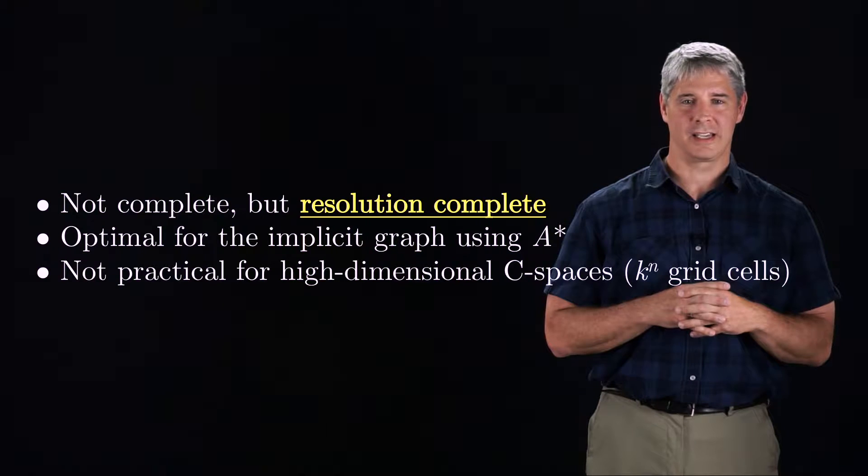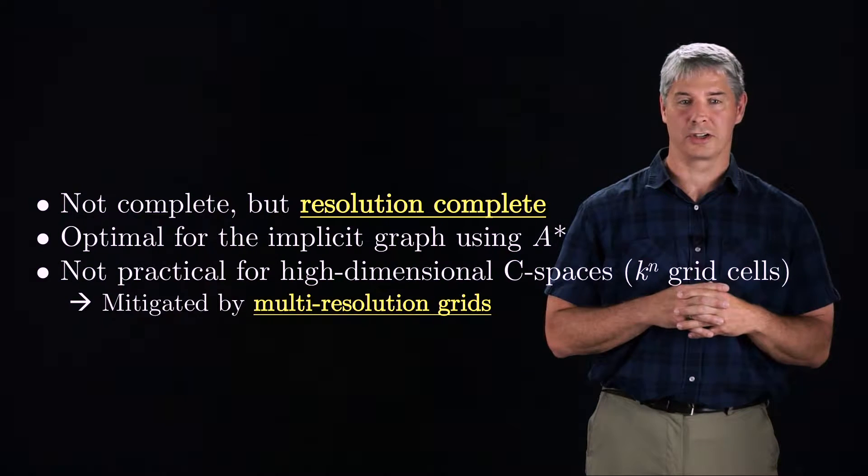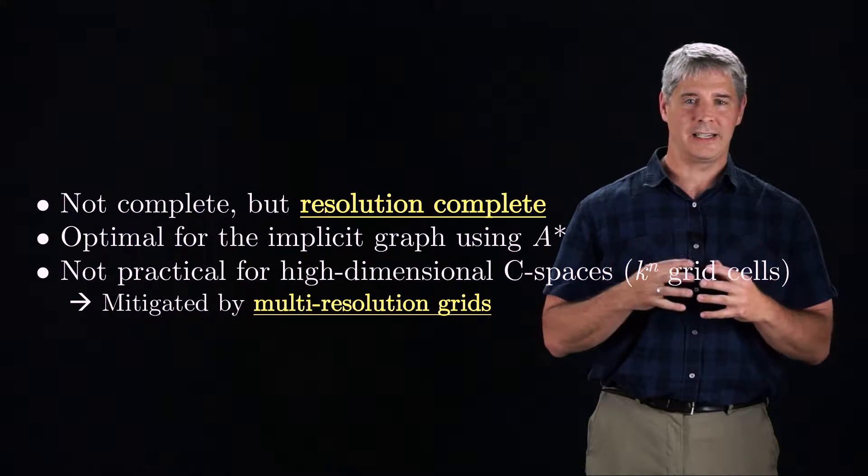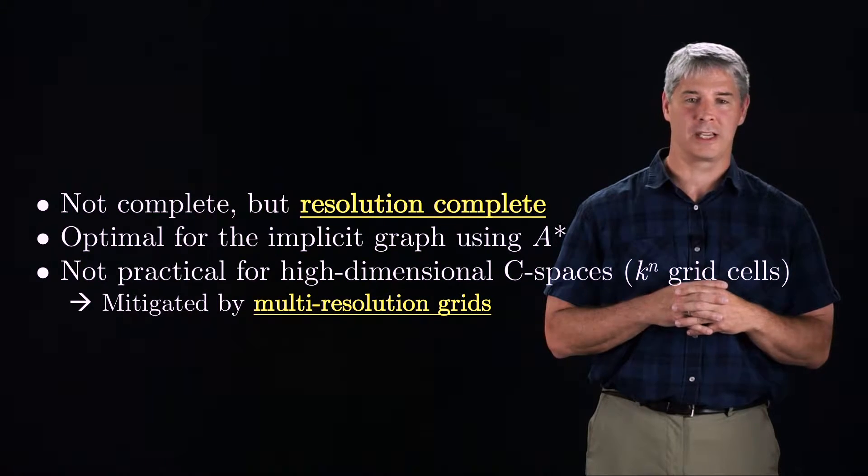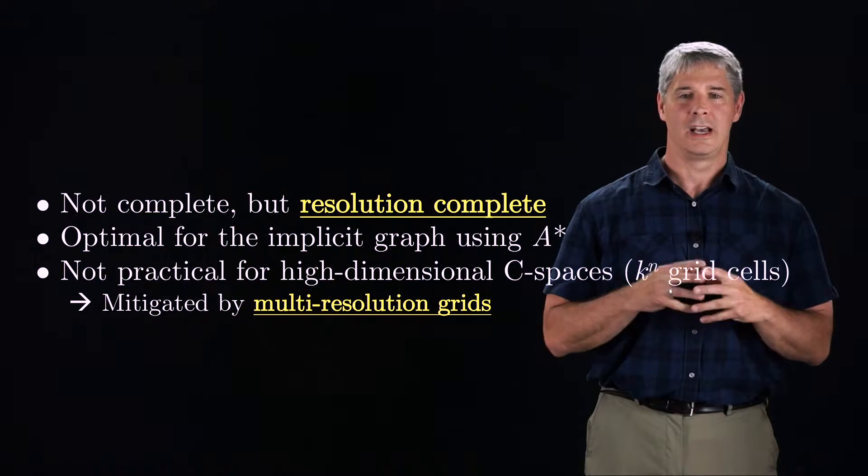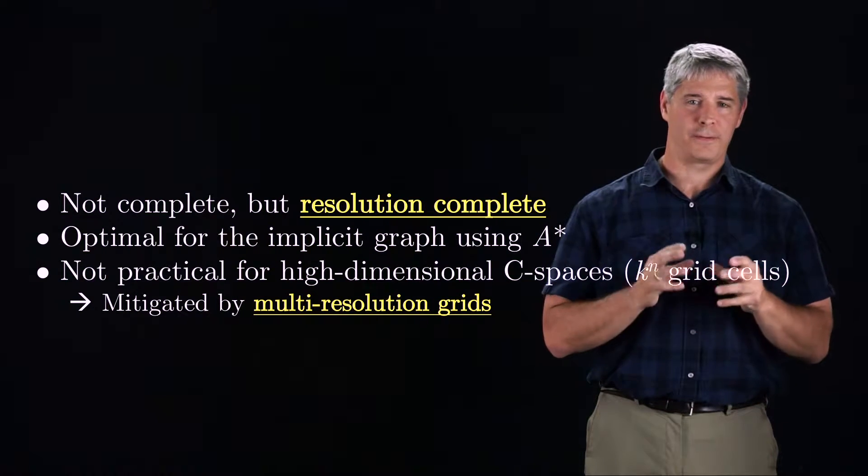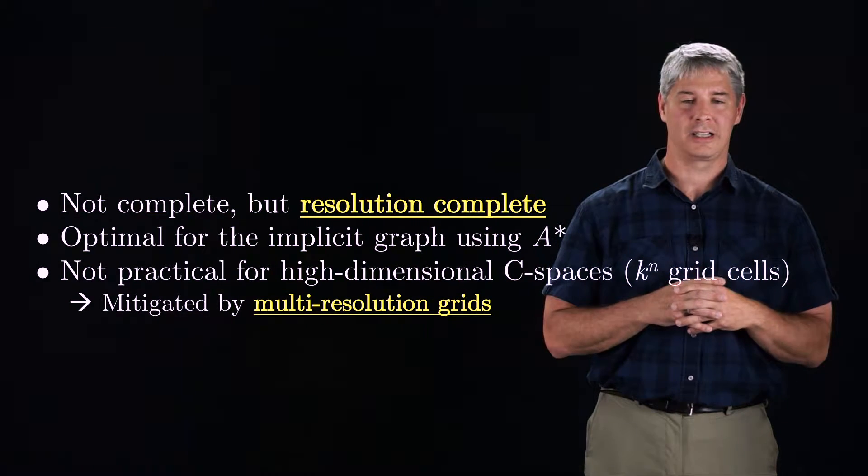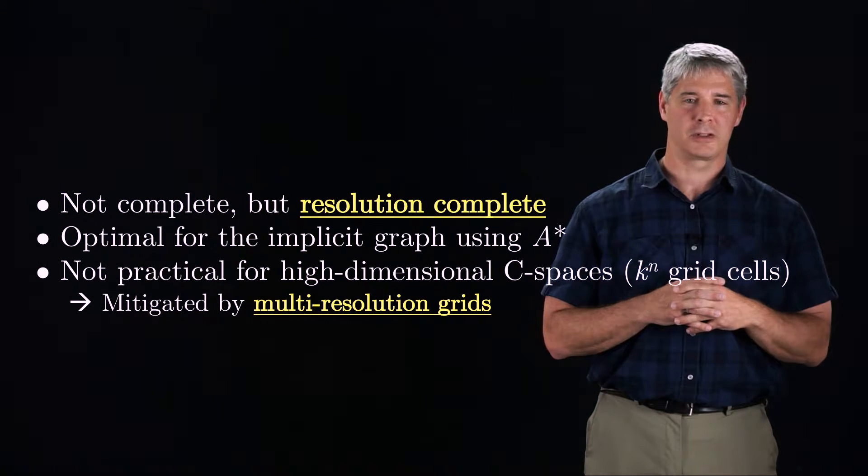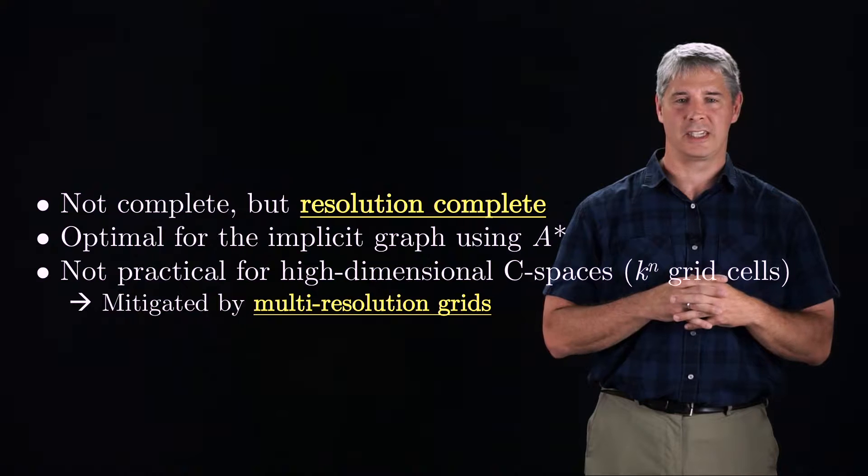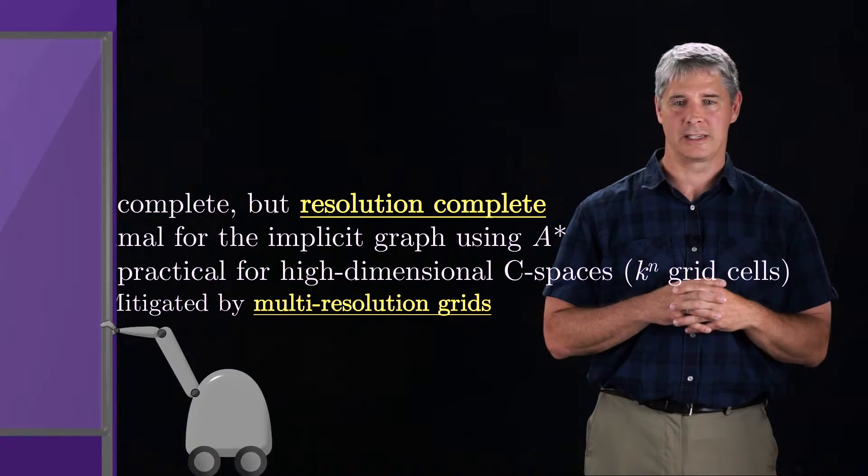This problem can be mitigated to some extent by using multi-resolution grids. The key idea here is not to choose the discretization level K in advance, but to represent the free C space coarsely in wide open regions, and to use a finer resolution where the C space is cluttered. This should keep the representation of the C space relatively small, while still allowing representation of narrow passages of free space.